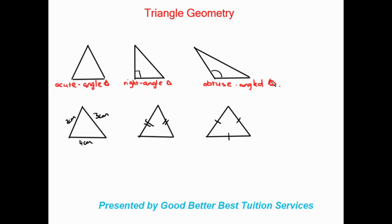Those are three different types. The next three types are based on side lengths. This triangle has sides of two centimeters, three centimeters, and four centimeters — all three sides are different sizes. We call a triangle with three different side lengths a scalene triangle.